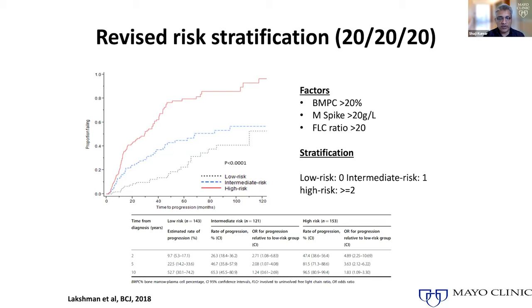If we watch patients with smoldering myeloma very closely, dramatic events like kidneys shutting down don't happen overnight — we have plenty of warning as long as we monitor these numbers. We want to intervene only for those at highest risk. One recently developed model is the 20-20-20 model, which looks at bone marrow plasma cell percentage, free light chain levels, and M spike levels to identify who is at highest risk. As Dr. Gobiel will discuss, other factors such as the genetic makeup of the plasma cells can also help predict who might progress to active myeloma.